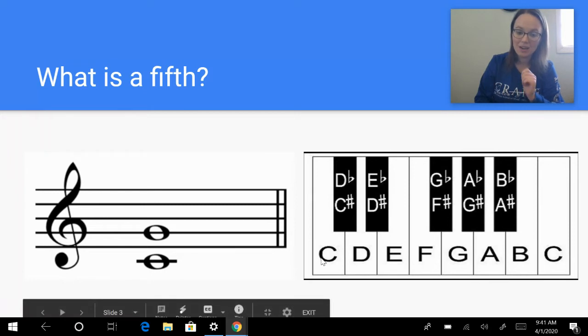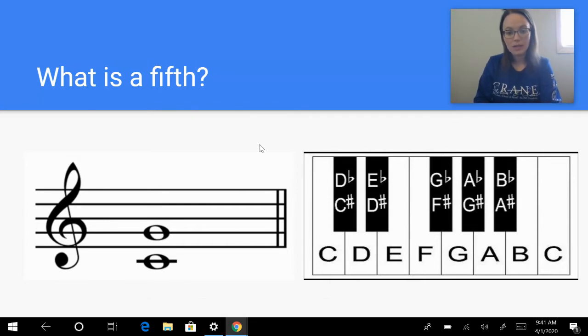So if we were to start with a C on the keyboard, one, two, three, four, five, six, seven, that makes something called a perfect fifth. C to G is a perfect fifth. I have that written over here for those of you who read treble clef.